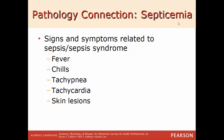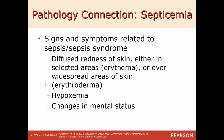Signs and symptoms related to sepsis include fever, chills, tachypnea (fast breathing), tachycardia (fast heart rate), and skin lesions. The prefix tachy means fast. The body tries to compensate by breathing faster and the heart beats faster to get blood to organs not receiving adequate flow. Other signs include diffused redness of the skin, hypoxemia (low oxygen in the blood), and changes in mental status — whenever the brain doesn't get enough oxygen, thinking becomes fuzzy due to lack of oxygen.